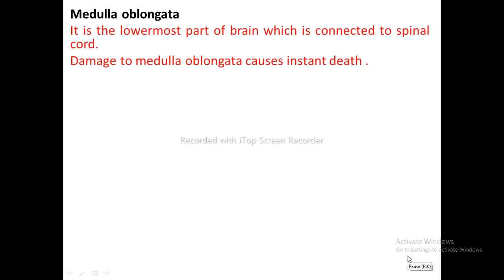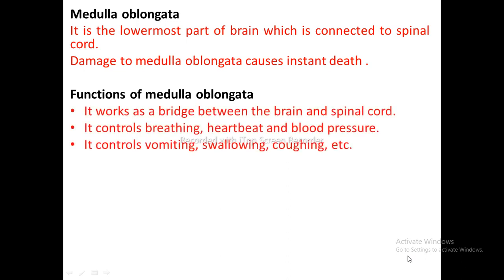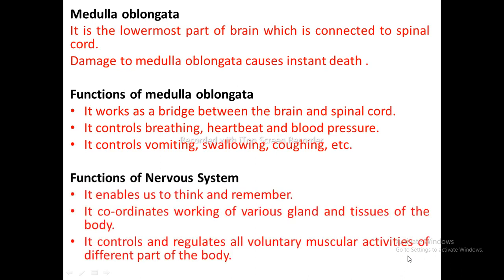Medulla Oblongata: It is the lower part of the brain connected to the spinal cord. Damage to the medulla oblongata causes instant death. Functions: it works as a bridge between the brain and spinal cord, controls breathing, heartbeat, and blood pressure, and controls vomiting, swallowing, and coughing. Functions of the nervous system: it enables us to think and remember, coordinates working of various glands and tissues, and controls voluntary muscular activities.